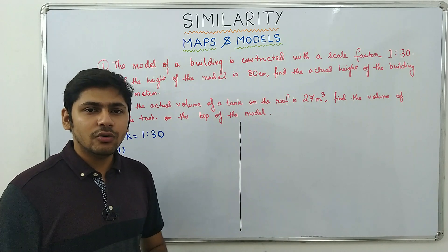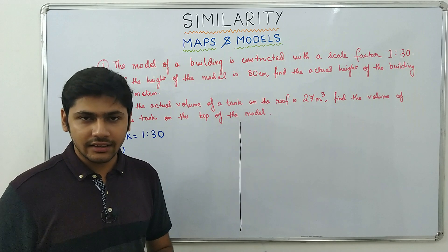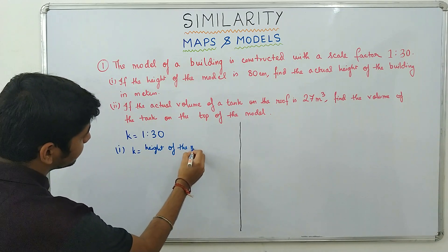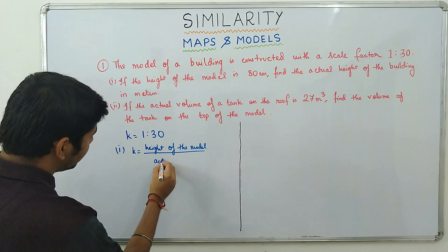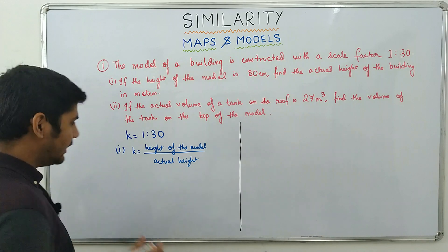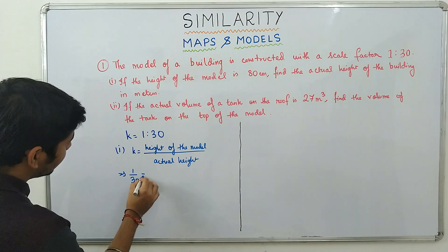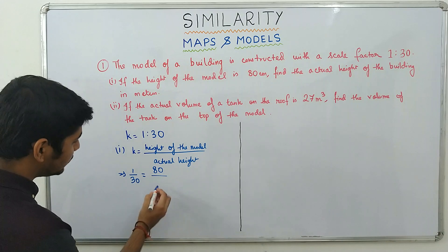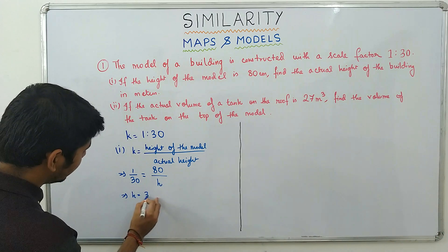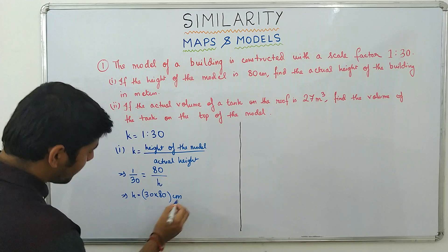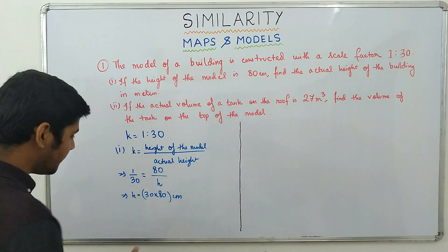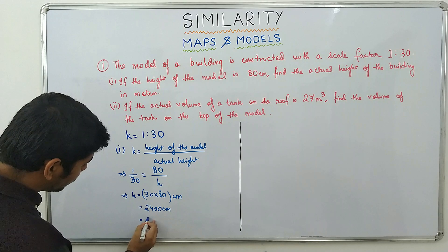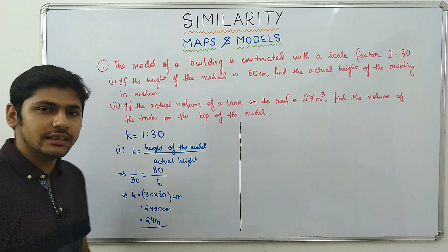We know K equals length of the model divided by actual length. So here, K equals height of the model divided by actual height. Therefore 1/30 equals 80 cm divided by H, where H is the actual height. So H equals 30 × 80 centimeters, which equals 2400 centimeters. Since we need the answer in meters, that equals 24 meters. So the actual height of the building is 24 meters.